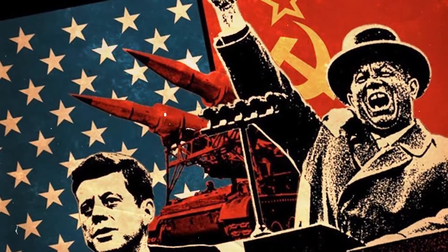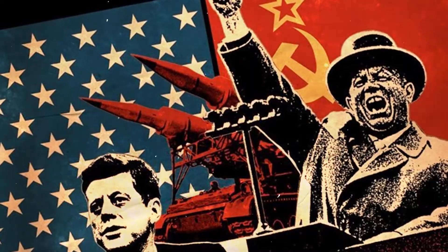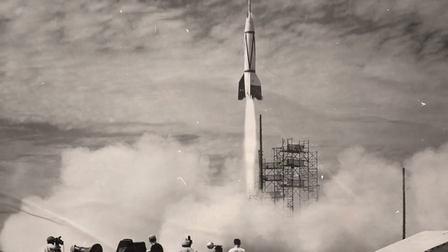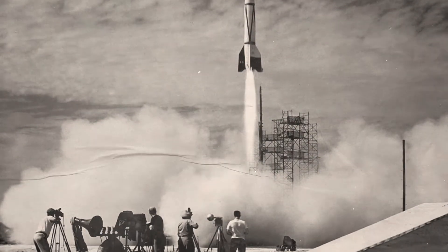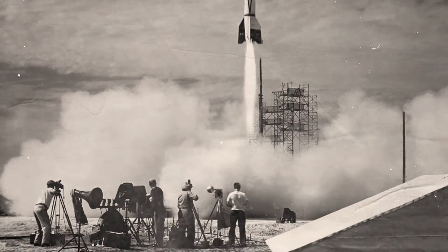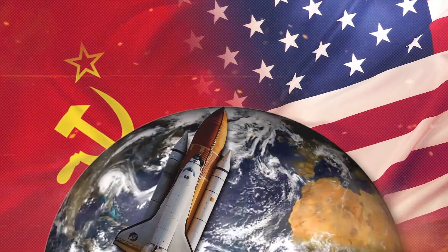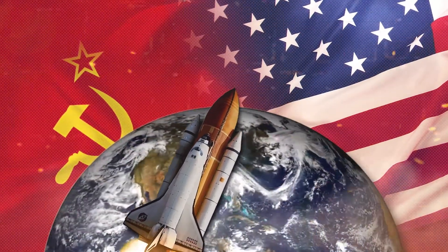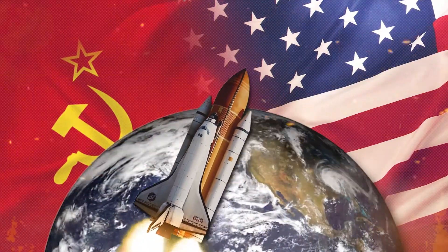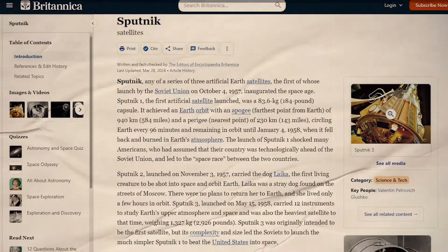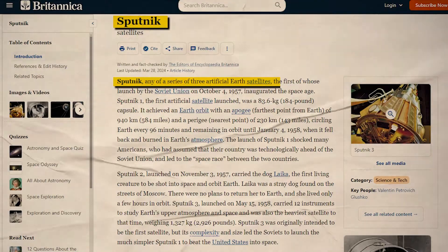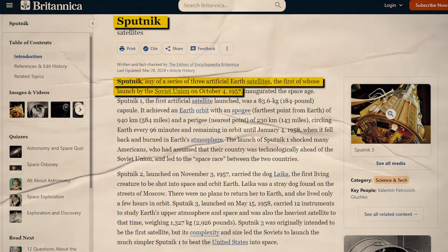Their story begins in the thick of the Cold War, with the space race acting as a catalyst for rapid technological advancements. It was during this period of intense competition between the United States and the Soviet Union that the first artificial satellite, Sputnik, was launched in 1957.